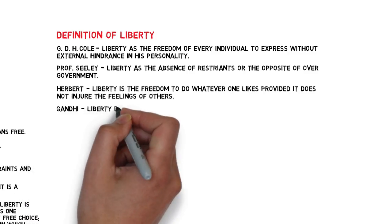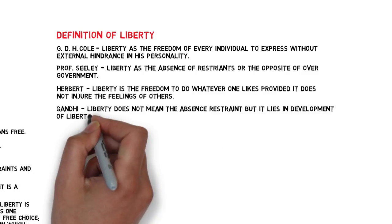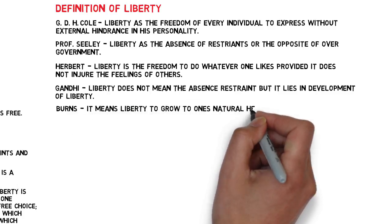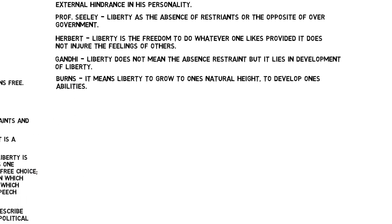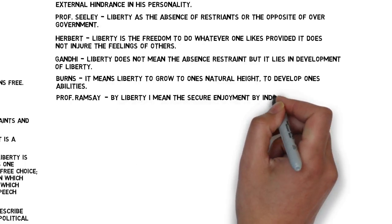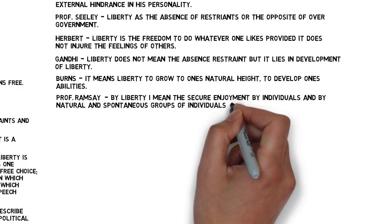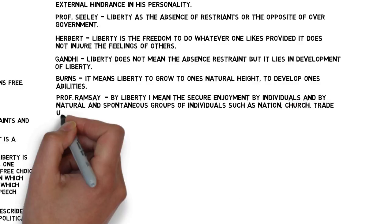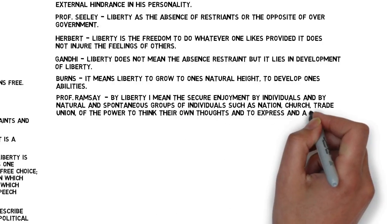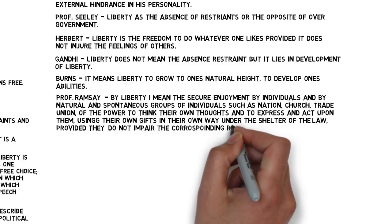According to Gandhi, liberty does not mean the absence of restraint, but it lies in the development of liberty. According to Burns, liberty means the liberty to grow to one's natural height and to develop one's ability. According to Professor Ramsey, by liberty he means the secure enjoyment by individuals and by natural and spontaneous groups — such as a nation, church, or trade union — of the power to think their own thoughts, and to express and act upon them using their own gifts in their own way, under the shelter of the law, provided they do not impair the corresponding rights of others.